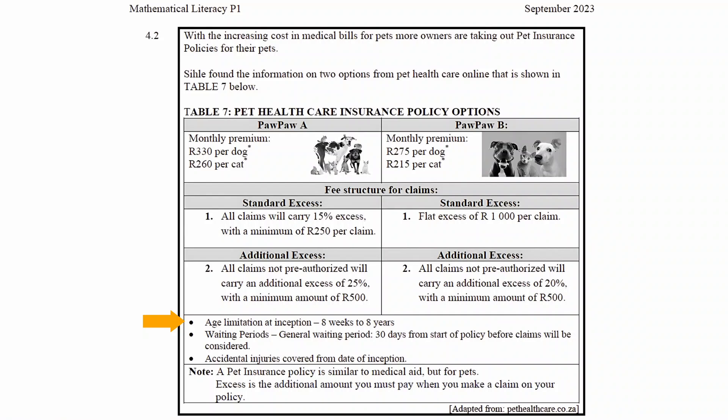There are additional notes stating age limitations: animals must be between eight weeks and eight years, meaning a pet can't be younger than eight weeks or older than eight years to qualify for this policy. There is also a waiting period of 30 days from the start of the policy before claims will be considered, and accidental injuries are covered from the date of inception. A note also clarifies that a pet insurance policy is similar to a medical aid but for pets.